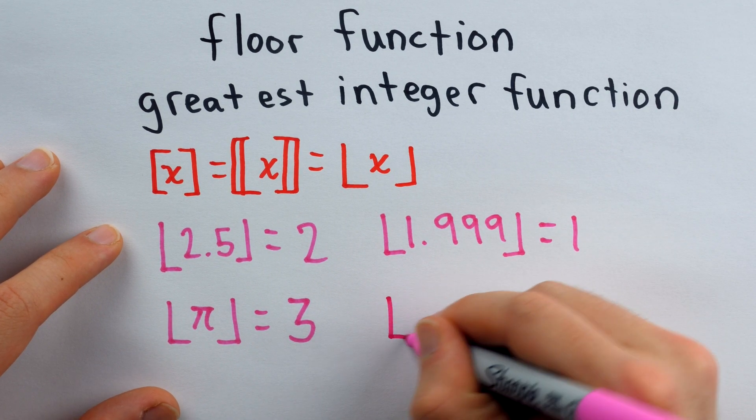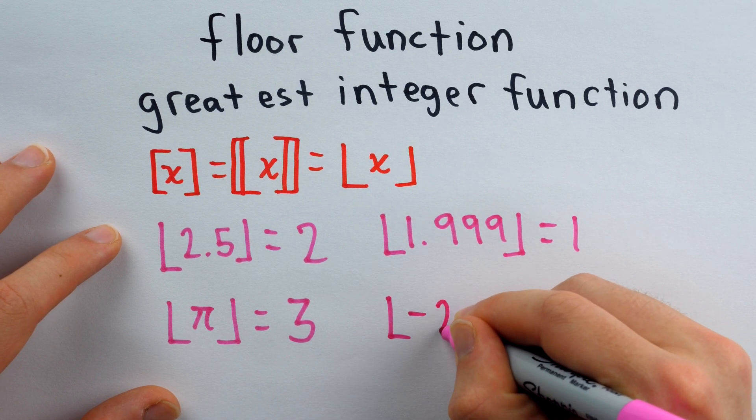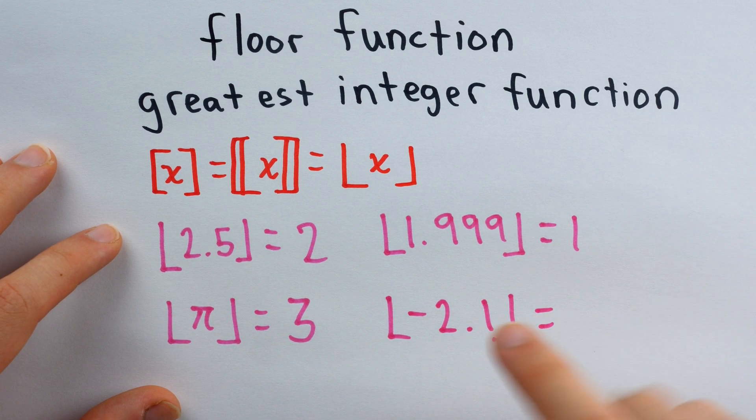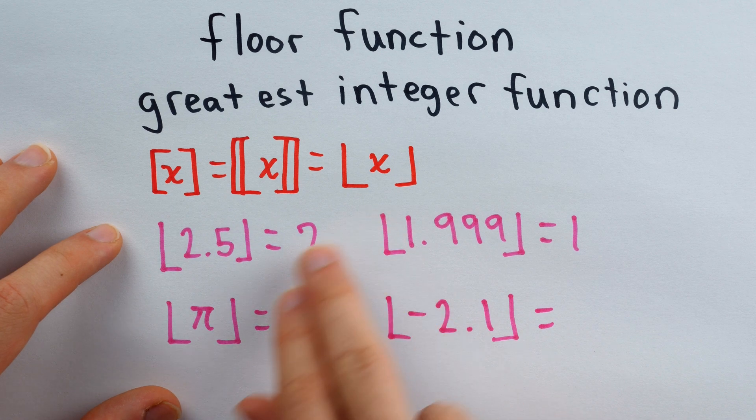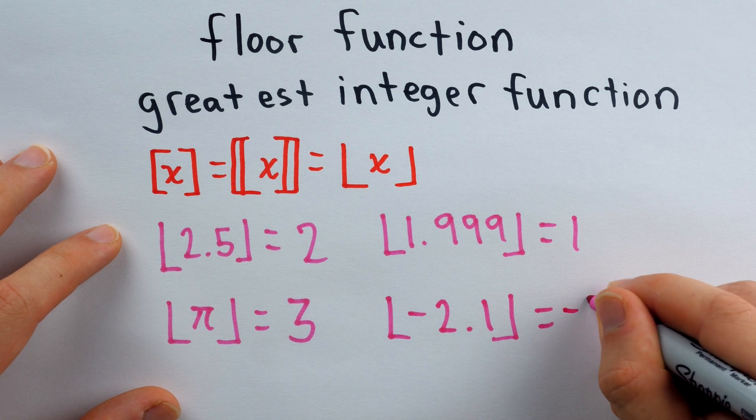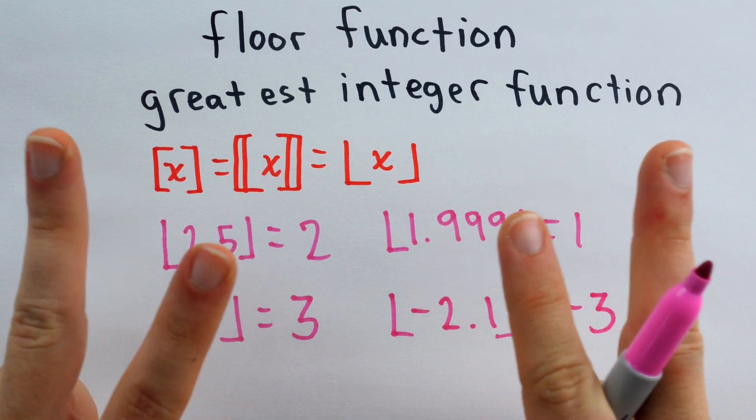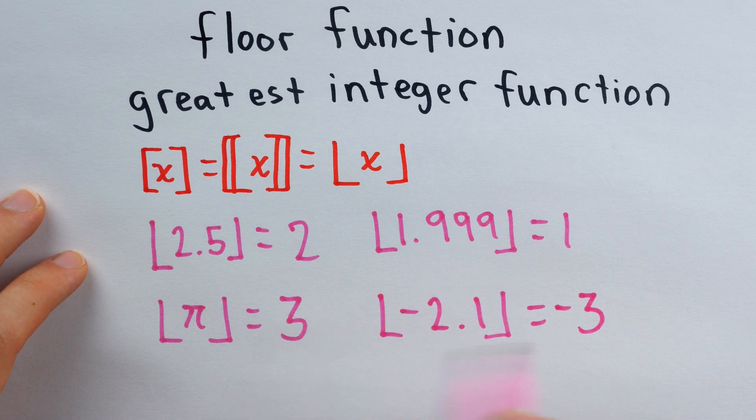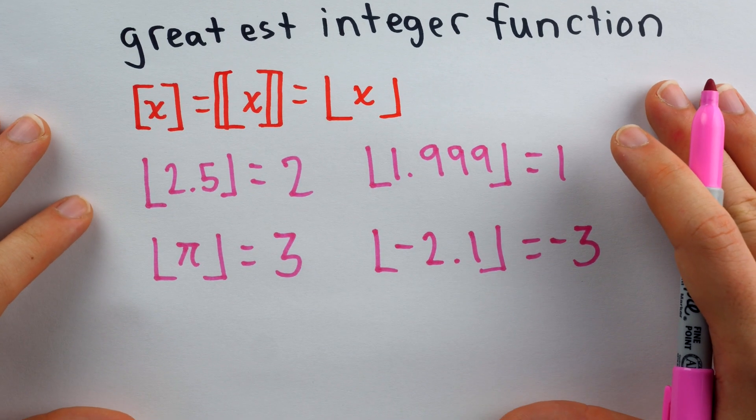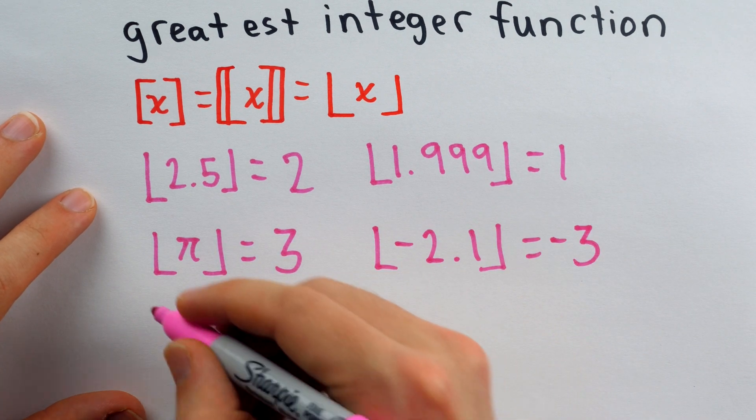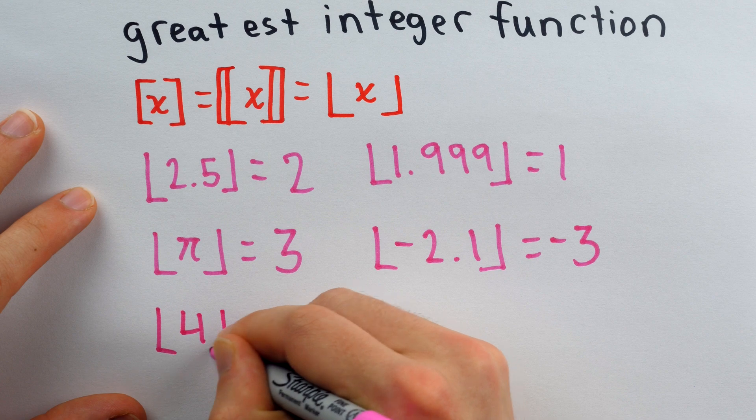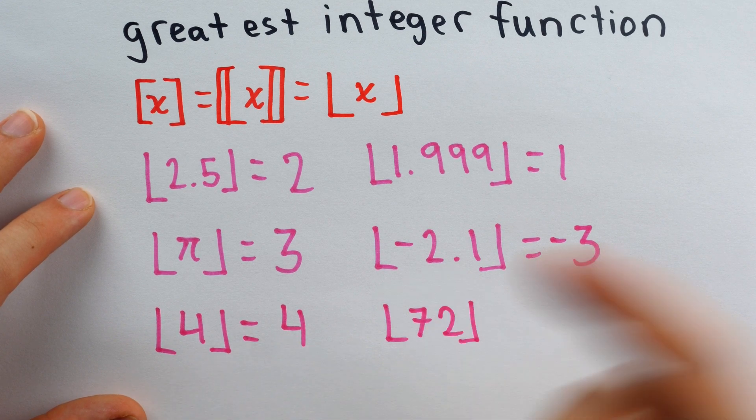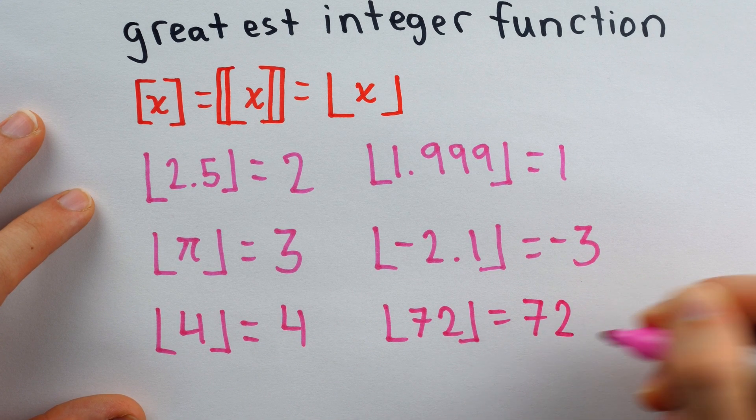Now, negatives can be a little tricky for people. For example, the floor function evaluated at negative 2.1 is not equal to negative 2. Negative 2 isn't less than or equal to negative 2.1. The greatest integer that's less than or equal to negative 2.1 is negative 3. In this case, rounding down feels a little bit weird, but that's how it works for negatives. It rounds it down to an even bigger negative number. Of course, if the number you plug into the floor or greatest integer function already is an integer, then there is no rounding to be done. For example, the floor function of 4 is 4. The floor function of 72 is 72.